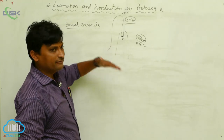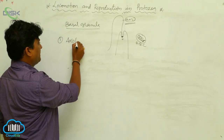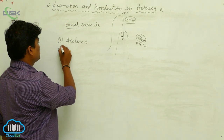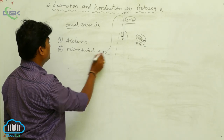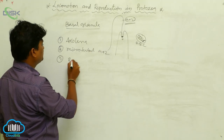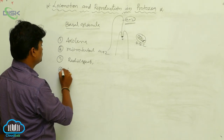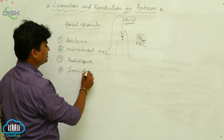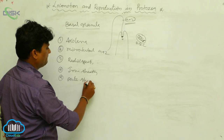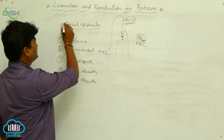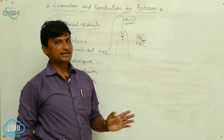Let us consider the parts and levels of flagella structure. The first part is the axolema. The second is microtubules in nine-plus-two arrangement. The third is radial spokes, along with the central filaments. The fourth is the inner sheet. The fifth is the outer sheet. The sixth is the basal granules. These are the main structural components of the flagella.